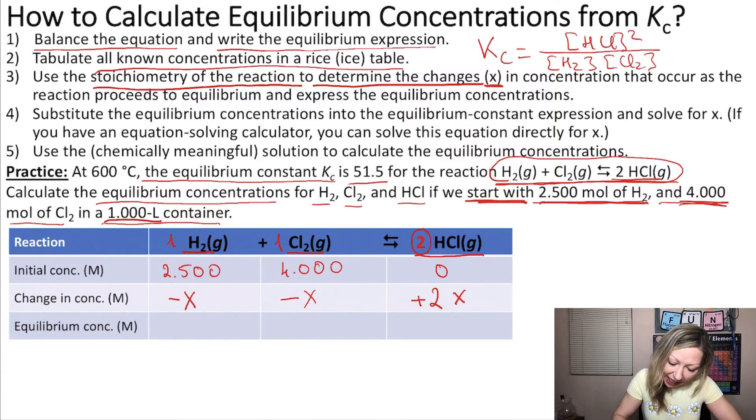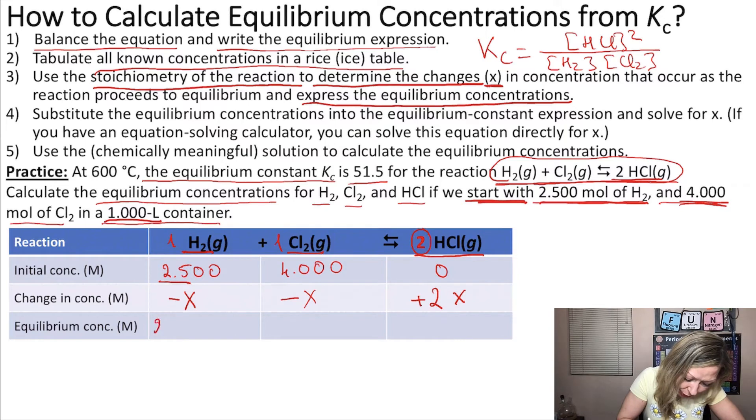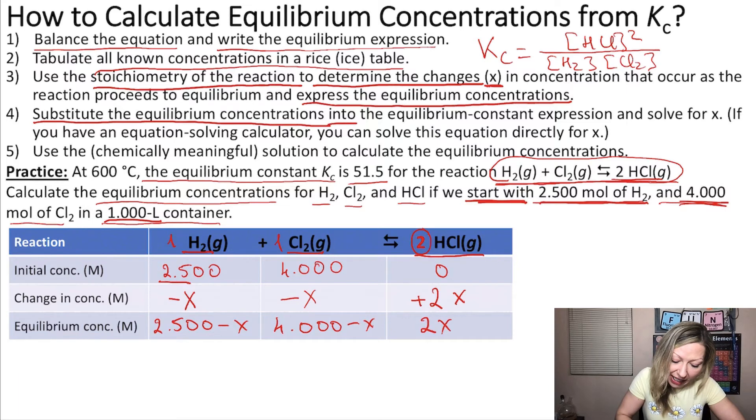Since we are done with that, we need to move further. We also have to express the equilibrium concentrations using these changes. So if I had 2.5 mole per liter at the beginning and I had a change of minus X, my equilibrium concentration will become 2.500 minus X. In case of Cl2, it's going to be 4.000 minus X. And in case of 2 moles of HCl, it's going to become 2X.